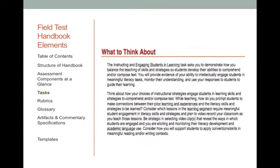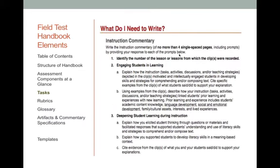Now let me break down the organization of each task in the handbook, as they follow a predictable pattern. Each task is organized around 4 questions. I'll use task 2 as an example to show you the basic organization — flip to task 2 in your handbook, around page 13. The first question answered for each task is: what to think about. This section orients you to the aims or learning goals for the task. The 'what do I need to write' section outlines the prompts you'll answer in the commentary for that task, and these prompts are repeated later in the templates. The guidelines in this section tell you exactly how many pages you have for each commentary — for example, the instruction commentary is 4 single-spaced pages.